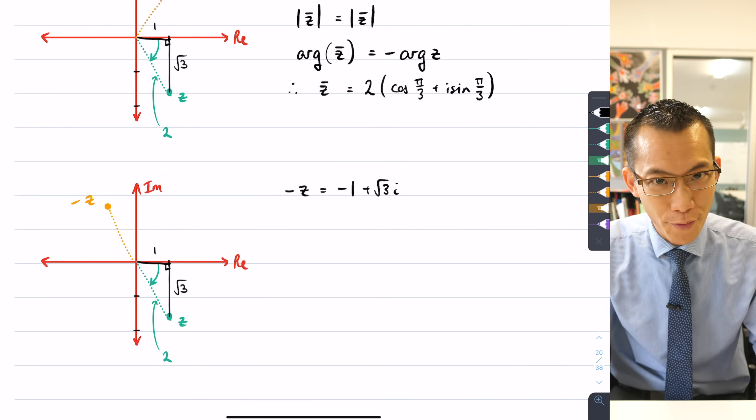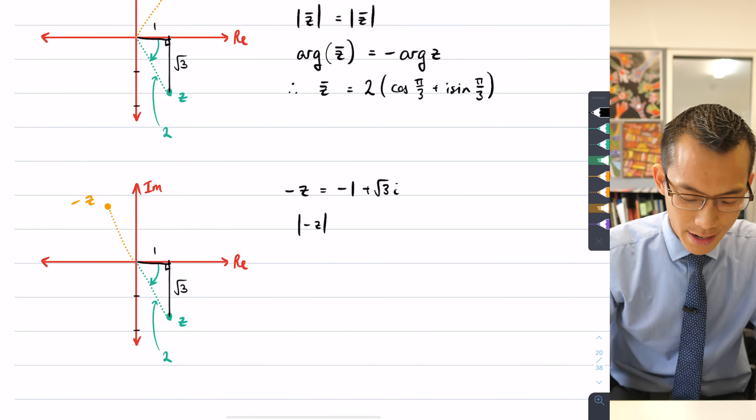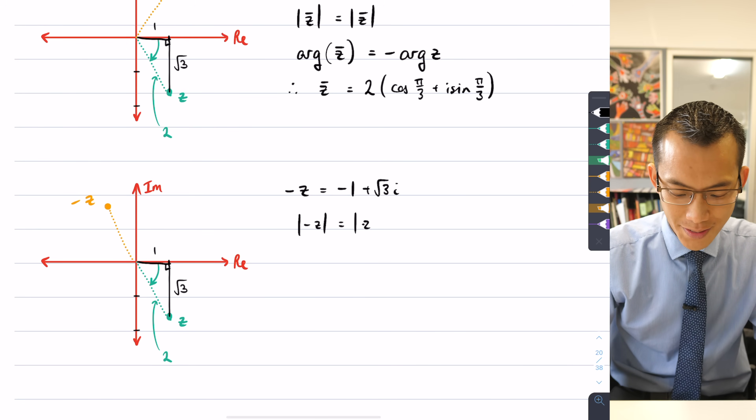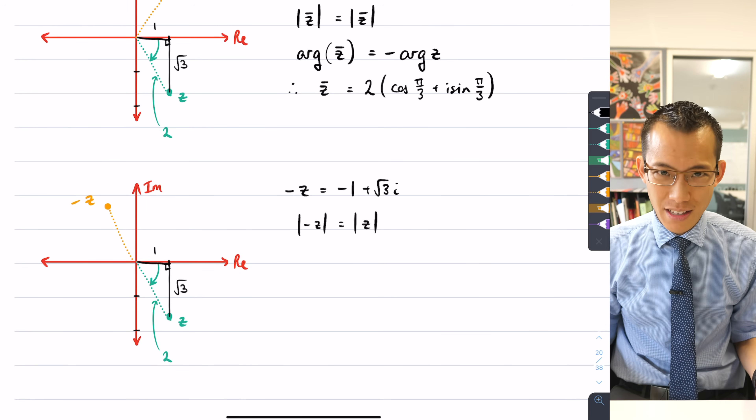So where is this guy in terms of my argument and my modulus? Well, just like before, so you get sick of this, right? The modulus is the same. The modulus of -z equals the modulus of z. And hopefully, as soon as you write that, you're like, oh, of course that's true,